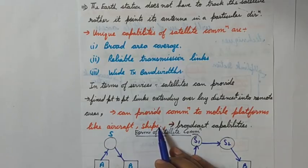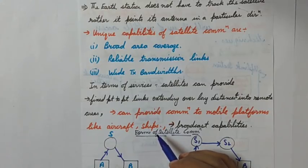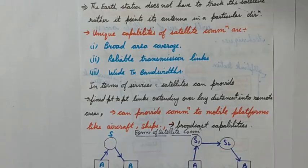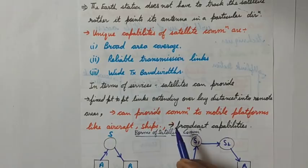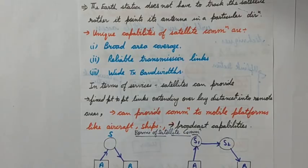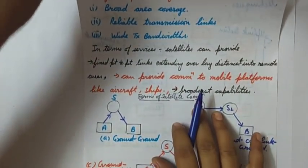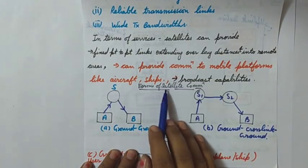Basically in villages and remote areas, the satellite is a very prominent solution. Satellites can also provide communication to mobile platforms like aircraft and ships. These are moving platforms, so communicating with them is very difficult. Earth stations at airports support aircraft navigation, and ships are also provided with navigation guidance through satellite communication — so many problems are rectified by satellite communication.